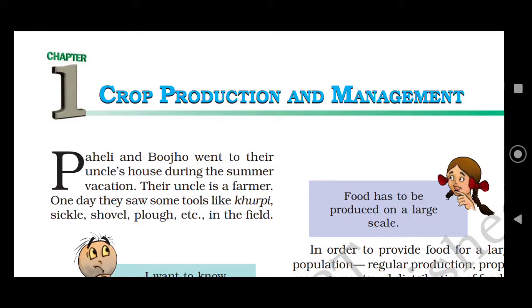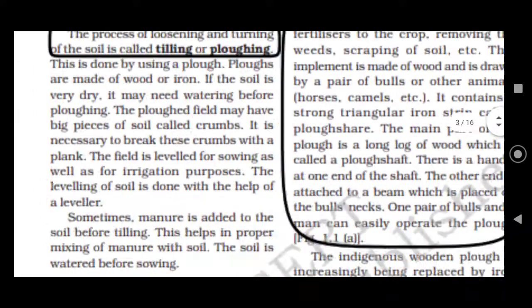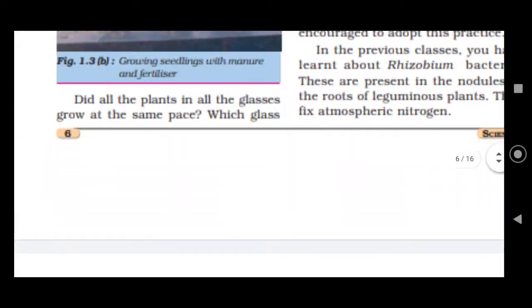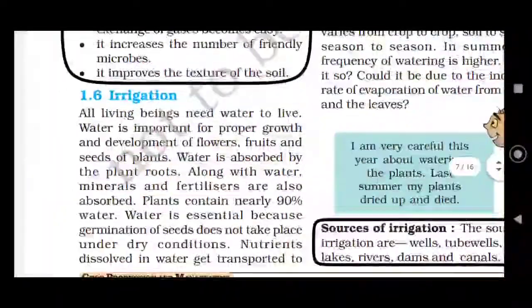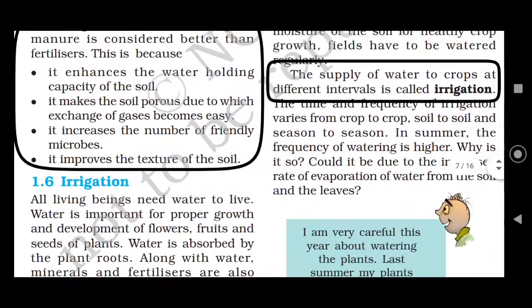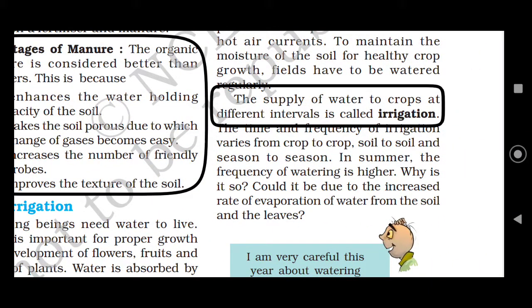Hello everyone, welcome back to my channel. This is Astar Sharma and you're watching Part 5 of Crop Production and Management. Let's start from the topic irrigation. Irrigation is the supply of water to a crop at different intervals. Water is the most essential thing for the growing of a crop or plant, which is why irrigation is important.